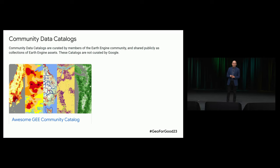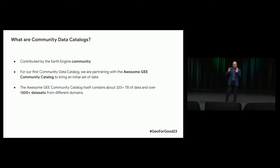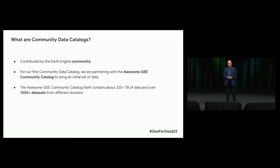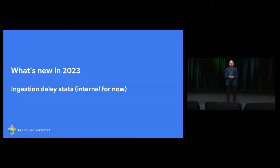Community data catalogs — you must know about Sam's catalog. It's been great. It actually has more datasets than the Earth Engine catalog; I think it's 1,300 now. We don't have all of them; we're launching with just a few. But it's already a very respectable 320 terabytes with a lot of use, requested by many people. So it was a very natural choice to offer Sam the chance to use community catalogs.